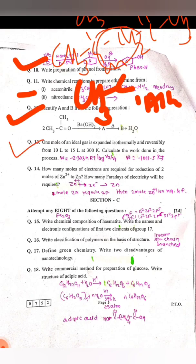The next 13 number question, we have to utilize W = -2.303 RT log V2/V1, and the answer will be 1011.5 kilojoules. In 14, zinc is the divalent compound, required two electrons to neutralize the species. One mole of zinc required two Faradays, then two moles of zinc ions will be required four Faradays of electricity.